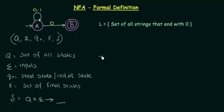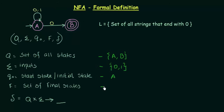In this particular example, Q is the set of all states, which are A and B. Sigma is the input, so the inputs are 0 and 1. Q0 is the start state — the state pointed by the arrow coming from nowhere — so the start state is A. F is the set of final states; here we have only one final state, B, represented by the double circle. Now what is Delta? This is what we are going to find out.